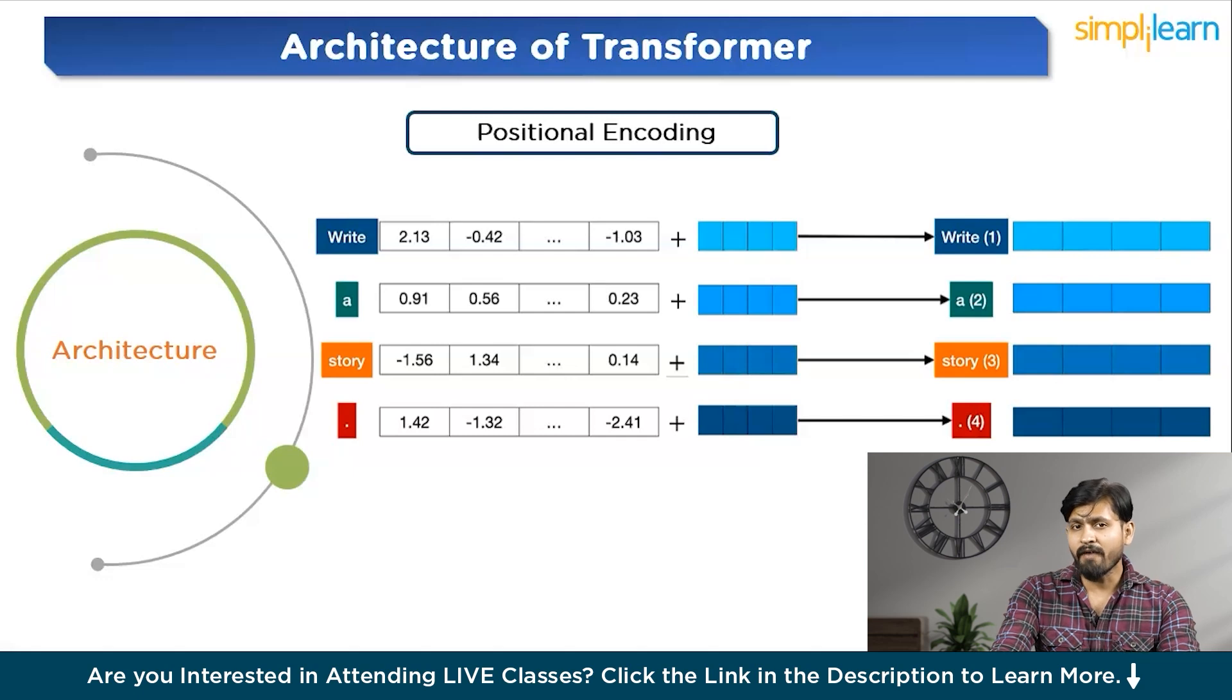By doing this, each sentence gets a unique vector representation even if the words are same but in a different order. For example, if we have the words like write a story and their vectors are adjusted with position informations like write 1, a 2 and story 3. So, in this way, even if the words are rearranged, the resulting vectors will be different ensuring that each sentence is represented uniquely.